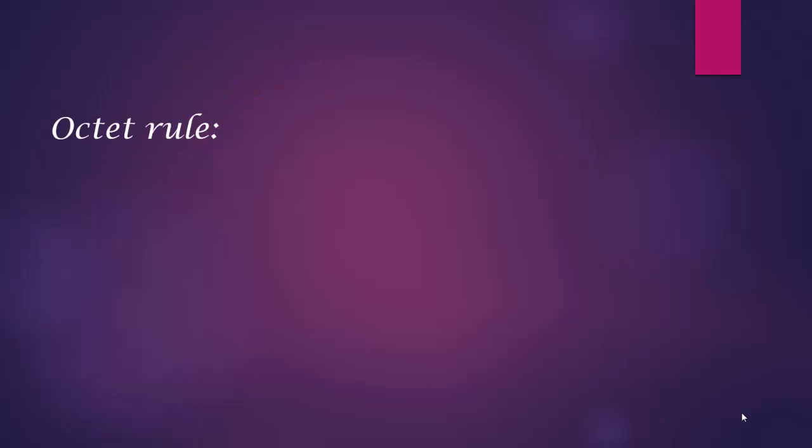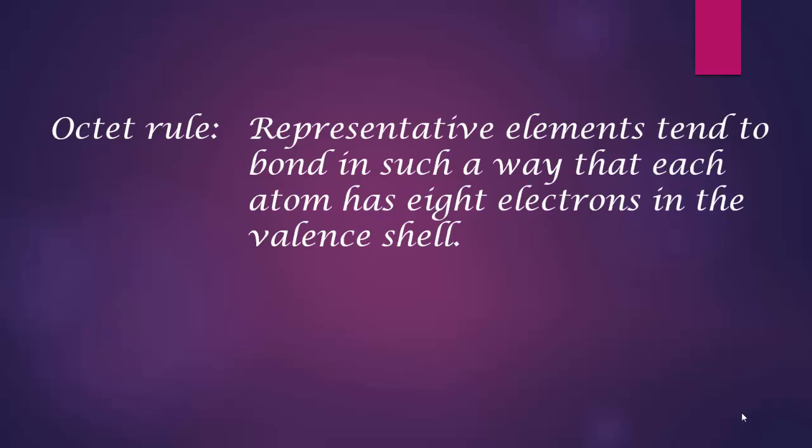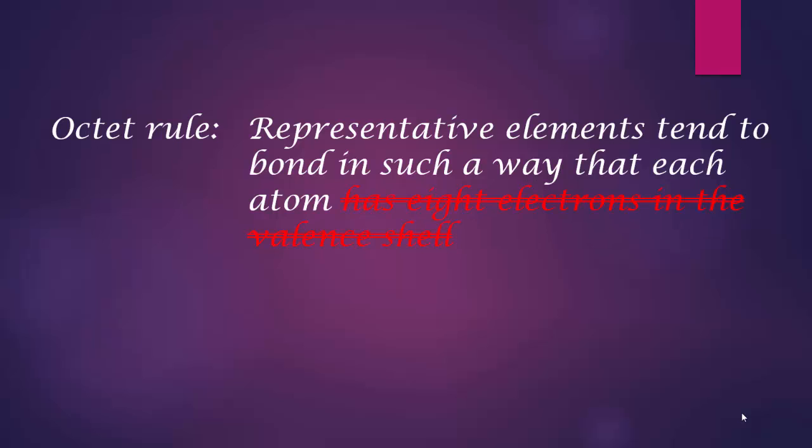And this leads to what is colloquially called the octet rule. The traditional definition of the octet rule is the representative elements tend to bond in such a way that each atom in the compound will have 8 electrons in the valence shell.